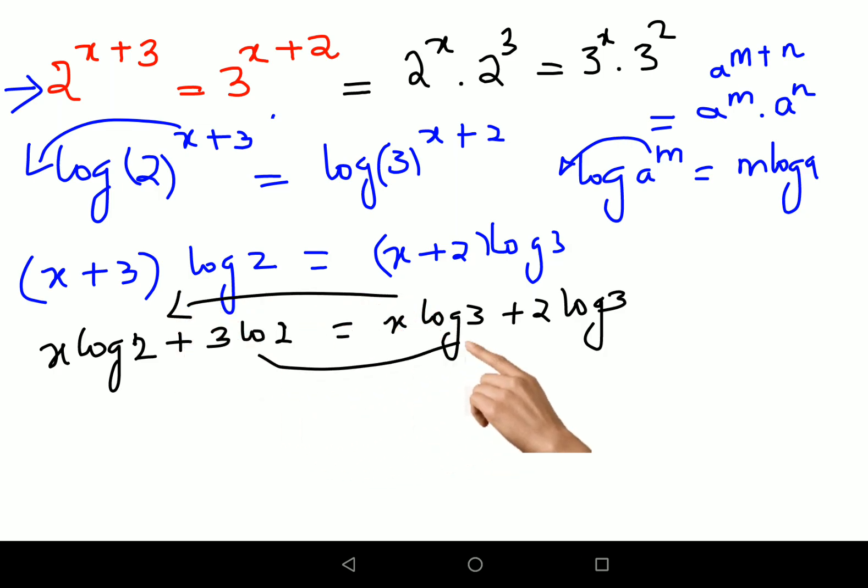So now we'll take the variables on one side and the numbers on another side. What we'll have is x log 2 minus x log 3 equals 2 log 3. Now understand I can even, this is obviously vice versa correct.